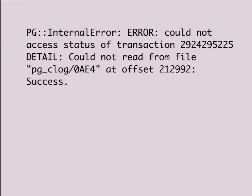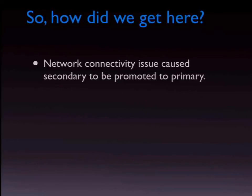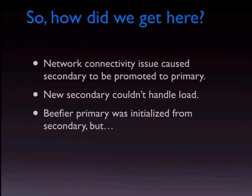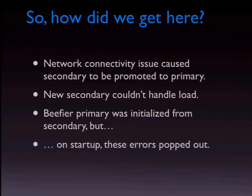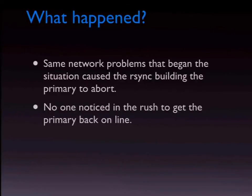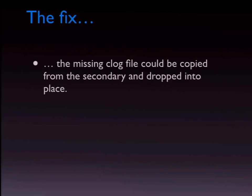Case study: errors were flying out of Postgres. The situation: network connectivity was bad between the primary and secondary, causing the secondary to be promoted to primary. The new secondary couldn't handle the load — if you're planning to use the secondary for failover, make sure it can keep up with your production load. They initialized a new primary from the secondary, but when starting up, all these errors started flying out. The problem was the network issues hadn't gone away during the rsync to create the new server. No one noticed the errors because literally no one scrolled back to see them. The C-log file was still available on the old secondary — we dropped it into place. Problem solved.